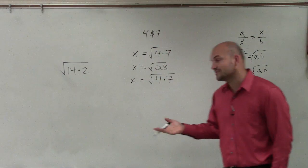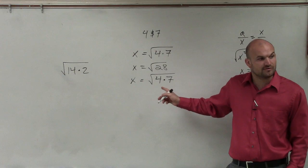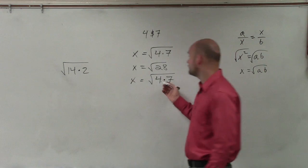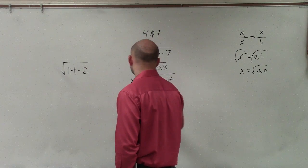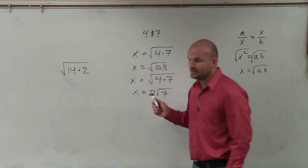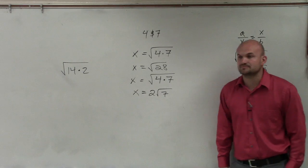Now, what's helpful about this, though, is now, can you take the square root of 4? Yeah, you can take the square root of 4, which is 2. So now I can take that outside of the square root. I cannot take the square root of 7. But that is how I'd like to see your answer: 2 square root of 7.